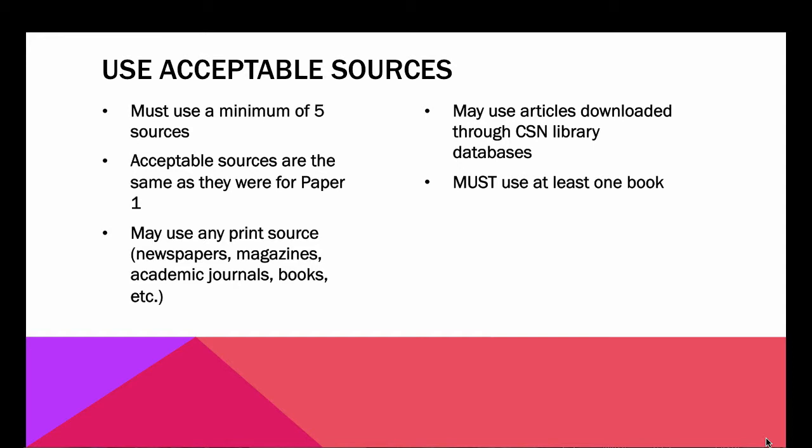You can't use any general websites — no .com, .net, .org, or .edu websites or sources without sending me the link so I can check it out, and you have to get my approval to use it. Some are fine and some aren't, depending on who produces them. Rather than have you learn how to make that determination — which you'll learn in English 102 — it's easier for you to just send me the link if you think a website is okay and I'll let you know. You may use .gov websites, and the Statistical Abstract of the United States is always a good source.